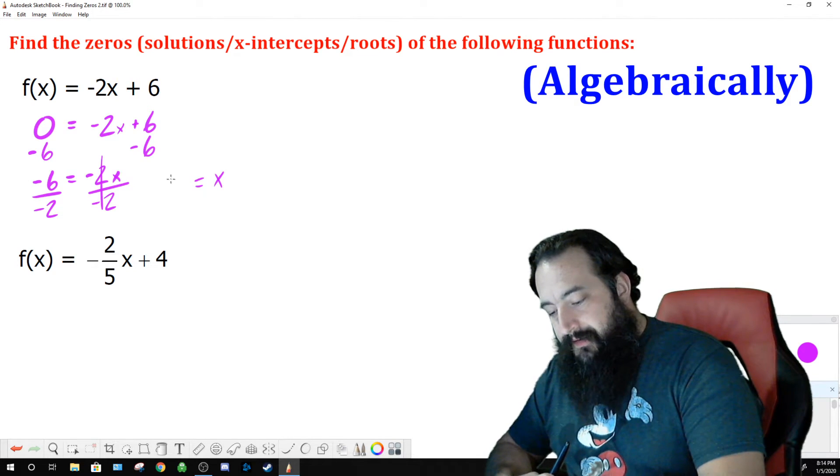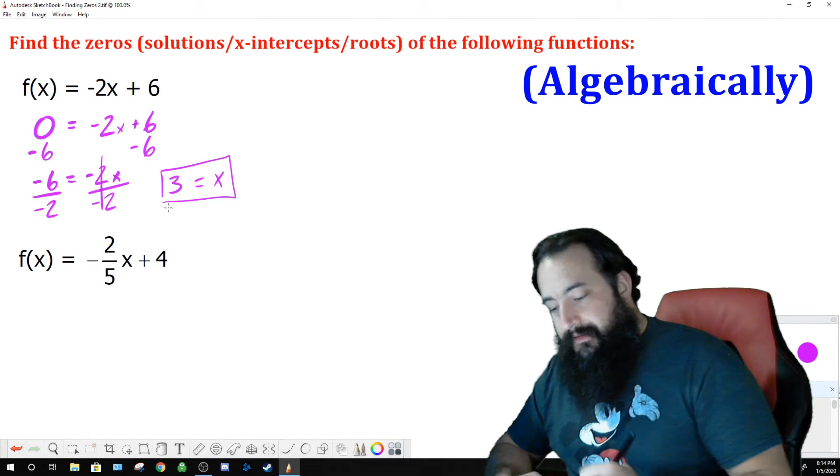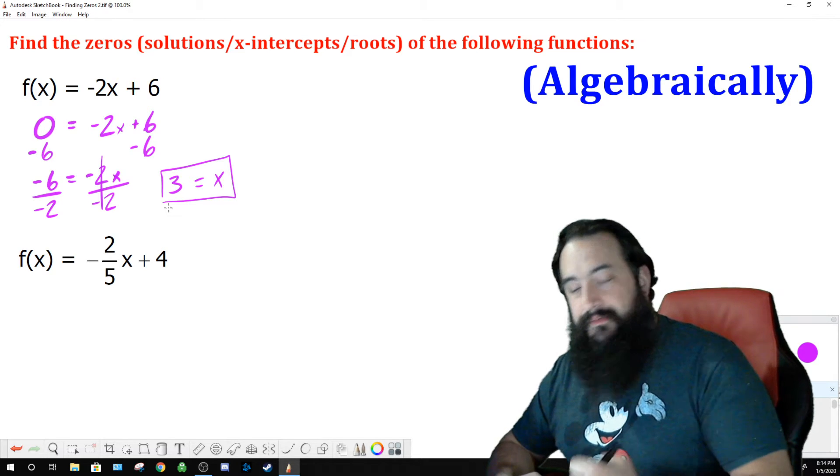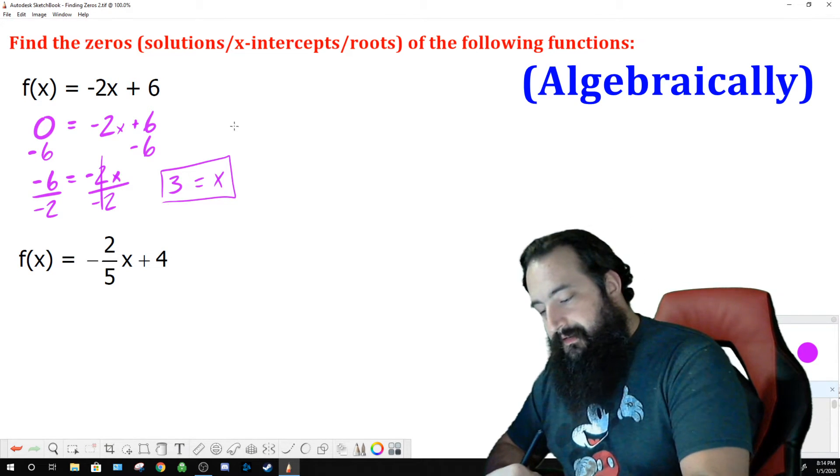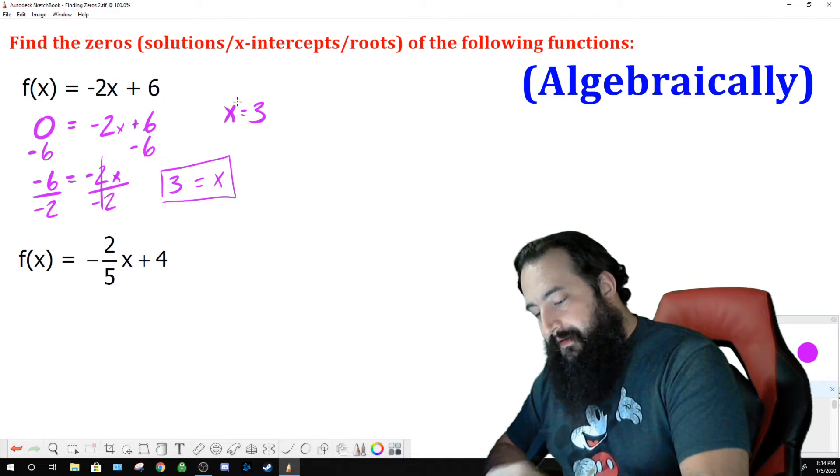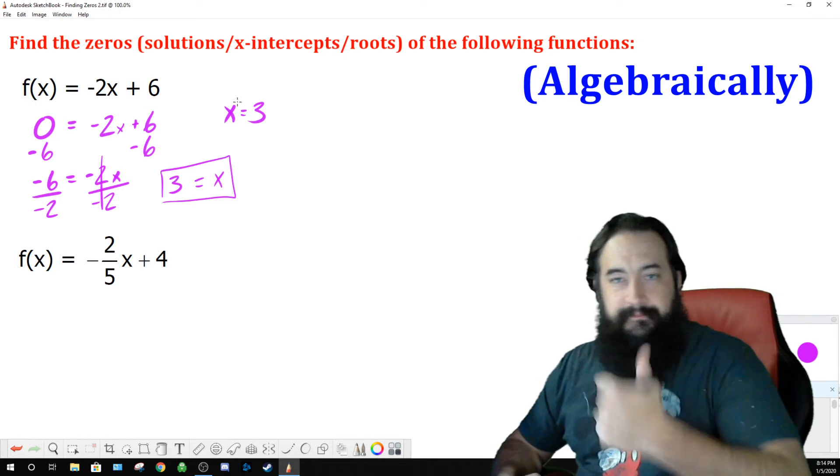Negative 6 divided by negative 2 is positive 3. So, the zero of this function, f(x) is equal to negative 2x plus 6, is x equals 3. Nice work!